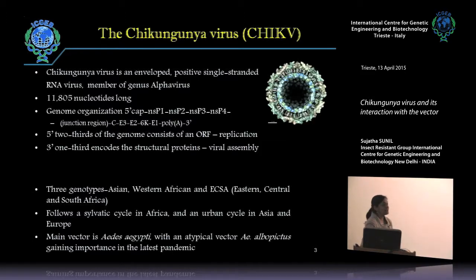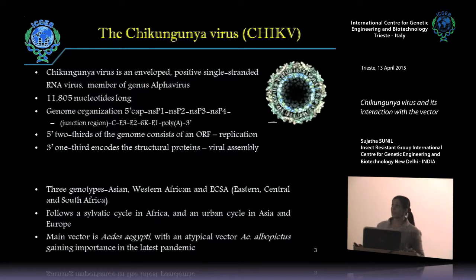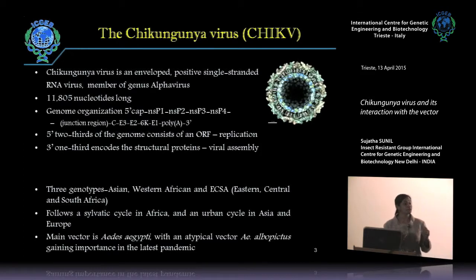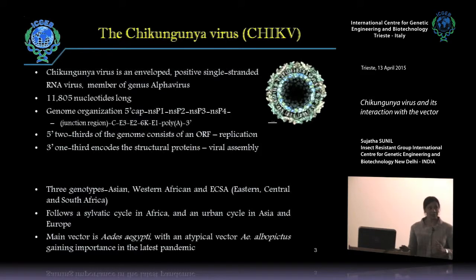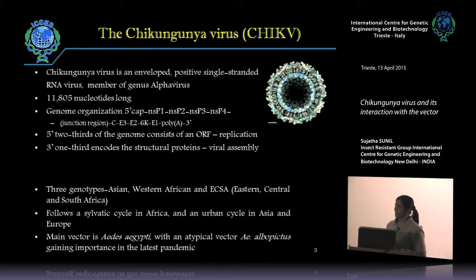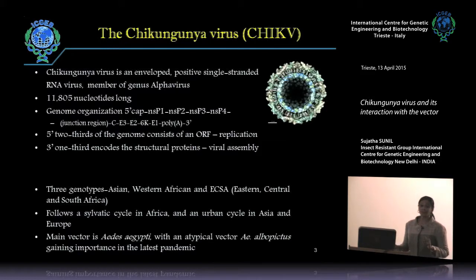The virus exists as three genotypes — unlike dengue, which has serotypes. These genotypes have been assigned based on the time they were first identified. In Africa you have the West African genotype, the Asian genotype, and the eastern, central, and South African genotype, called the ECSA genotype. It falls into a sylvatic cycle in Africa and an urban cycle in Asia and Europe, mainly because of spillover.